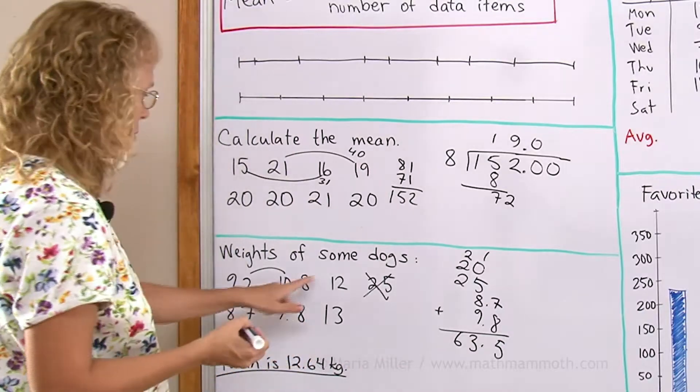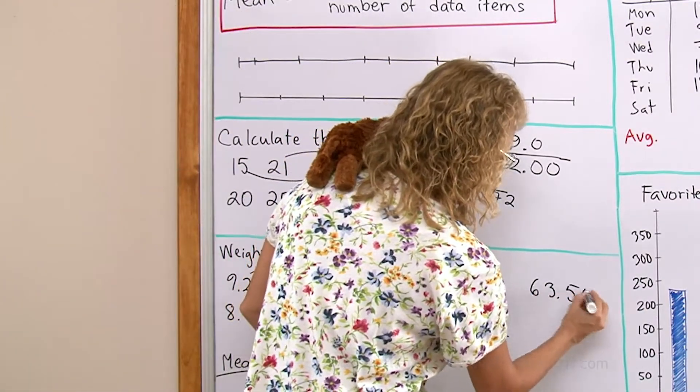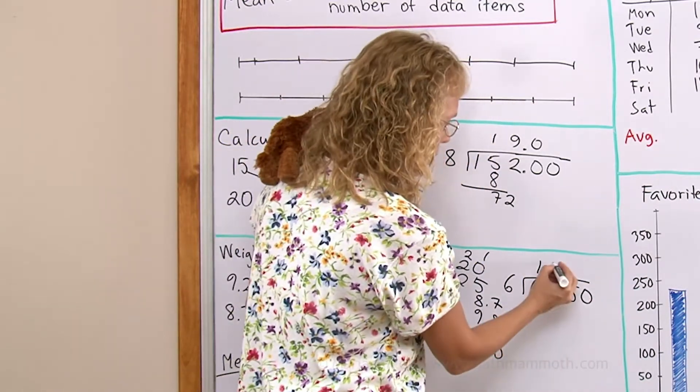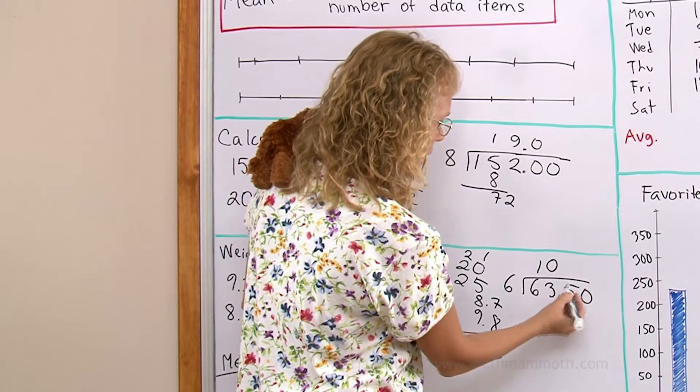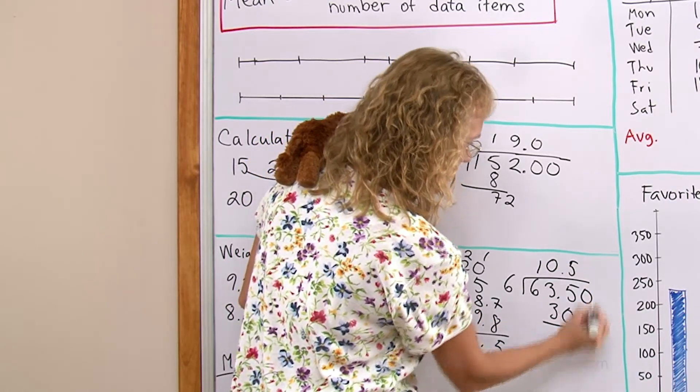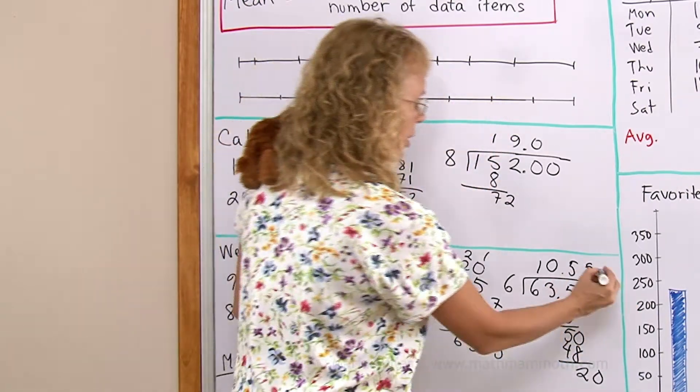We have 1, 2, 3, 6 dogs left. Then to 3, it goes 0 times. To 35, 5 times. It would be 1 more, 0, 3.